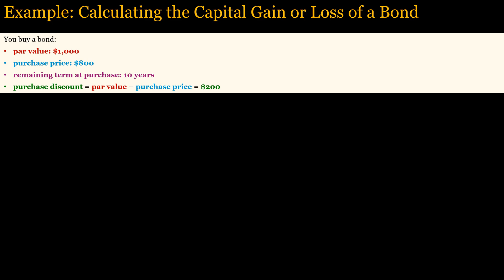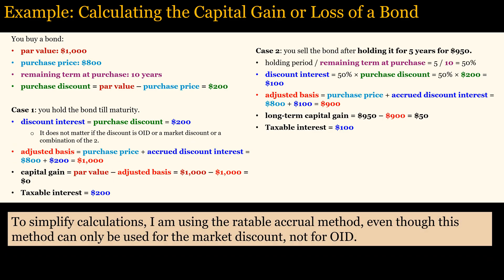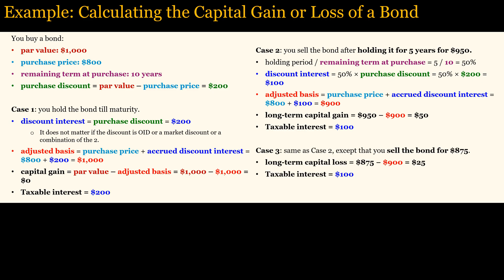Capital gain or loss can only be calculated after accounting for purchase price, accrued OID, and accrued market discount. Here are a couple of examples to illustrate. Case 1: You buy a bond for $800 with the remaining term at purchase of 10 years, and you hold the bond until maturity. Therefore, the $200 purchase discount is treated as interest, whether the discount is OID or a market discount, or a combination of the two. Because your adjusted basis is increased by the amount of the accrued discount interest, which is taxed as ordinary income, your redemption amount equals your adjusted basis, so you have no capital gain or loss. Case 2 is the same as Case 1, but you sell the bond for $950 after holding it for 5 years. Since your holding period is only 50% of the original remaining term, your discount interest equals 50% of the purchase discount, or $100, which is added to your basis. Therefore, your capital gain equals the sale price minus your adjusted basis of $900, equals $50. Case 3 is the same as Case 2, except the sale price equals $875. Therefore, you have a long-term capital loss of $25.